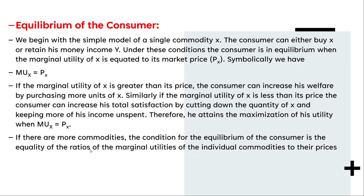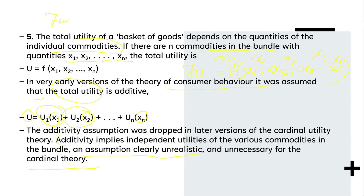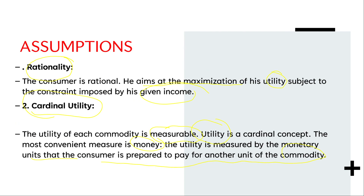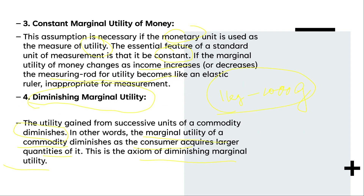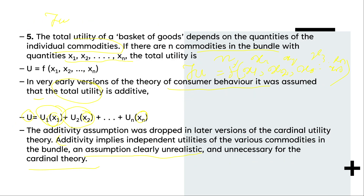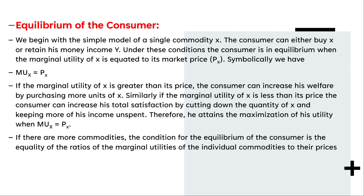Equilibrium of a consumer will be the next topic. To summarize the assumptions we covered: rationality, cardinal utility, constant marginal utility of money, diminishing marginal utility, and total utility. In the next part, we will consider equilibrium of the consumer. If you are finding the lessons beneficial, please like, share, and subscribe to the channel. Until next time, God bless you all. Thank you.